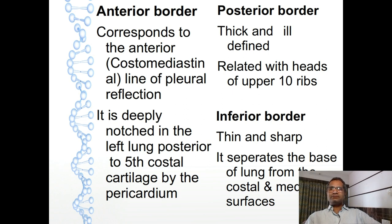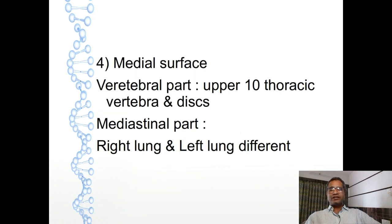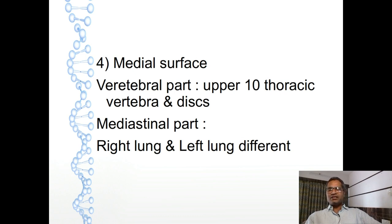Now medial surface in detail. Medial surface shows two parts: vertebral part and mediastinal part. The vertebral part is the posterior part of this medial surface. It comes in relation with the upper 10 thoracic vertebrae with their intervertebral discs. The anterior part of this medial surface is the mediastinal surface, which shows different structures in right and left lung.